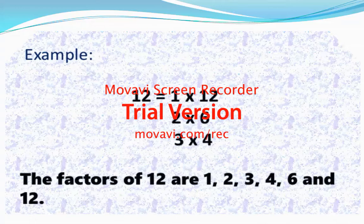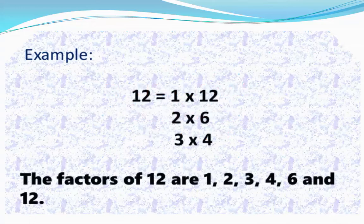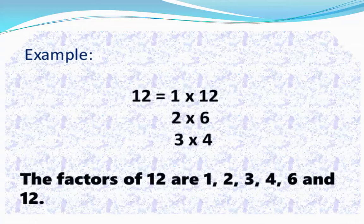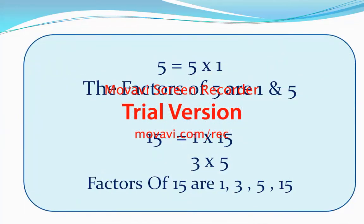Therefore one, two, three, four, six, and twelve are factors of twelve. These are the numbers that multiply together to give twelve.